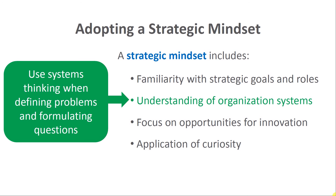In terms of understanding organizational systems, we really want to take a systems thinking perspective when defining problems and formulating questions. Systems thinking generally refers to the idea that the world — and organizations specifically — are made up of systems and subsystems, with linkages between many or all of them, often creating ripple effects. What you do in one subsystem might have effects down the line in other subsystems. People also live within an organizational system while simultaneously having their family system, friend system, and so forth — and all of these can be intertwined and affect each other.